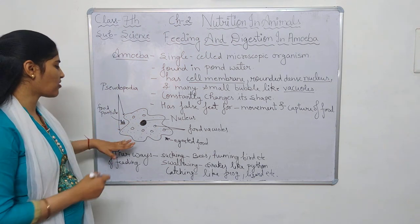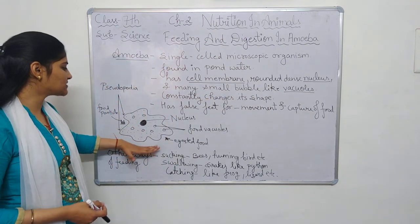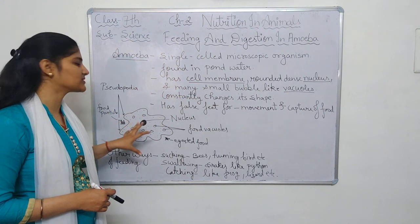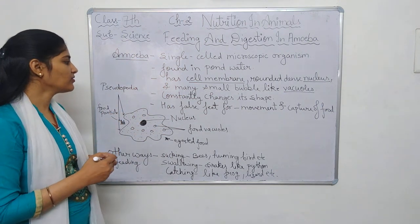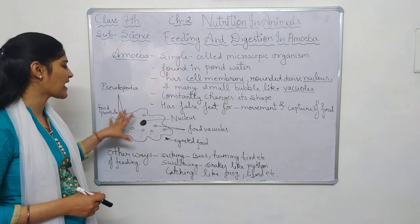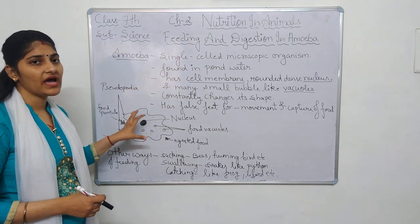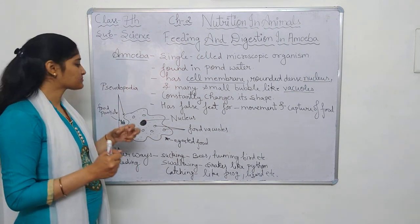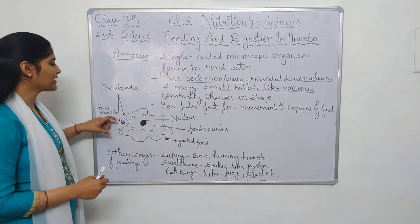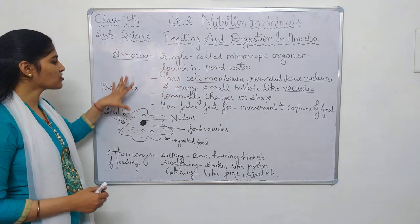This organism constantly changes its shape. As you can see in the diagram, it does not have a particular shape — it has an irregular shape that is constantly changing. It has false feet; you cannot differentiate which are feet and which are hands because of its irregular shape. But it needs help to take in food, and for that it has false feet. When it grows out these false feet, they are called pseudopodia.